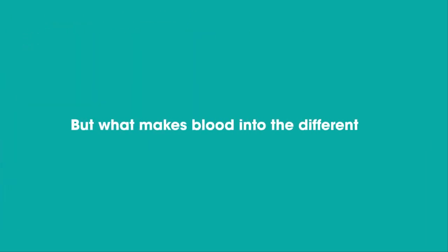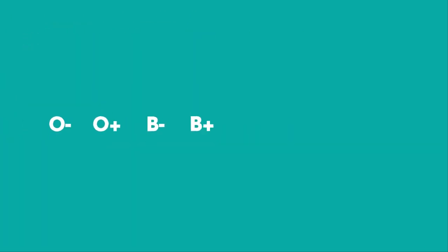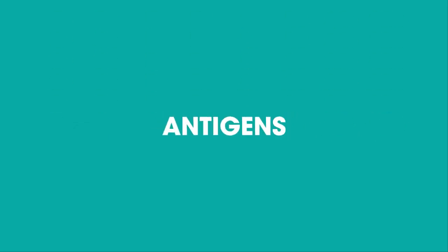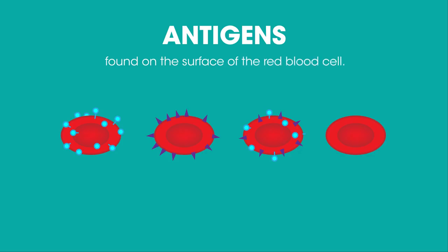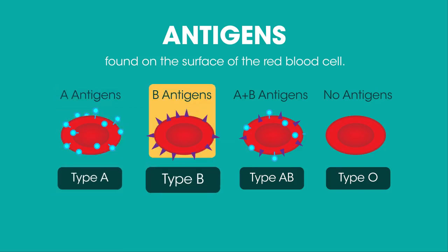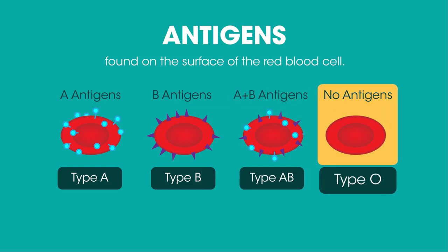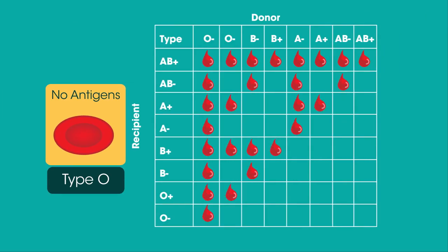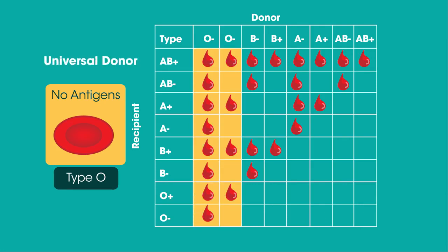But what makes blood into the different types? The type O, B, A, or AB depends on little molecules called antigens that are found on the surface of the red blood cell. The antigens can be one of four options: A antigens, B antigens, both A and B antigens, or there may be no antigens. The type of antigens you have determines which blood type you are. Type O doesn't have any antigens — that's why it's the special blood type that can be donated to everyone else. It's known as the universal donor.